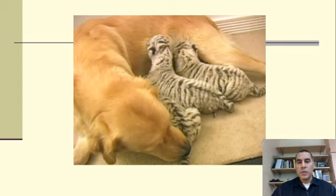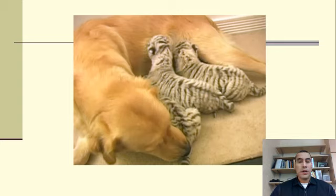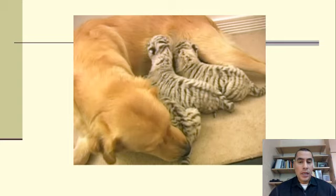I saw a video of a golden retriever that had taken in some baby tiger cubs abandoned by their mother and provided nourishment to them. A form of imprinting had occurred — these tiger cubs clung to the golden retriever, and interestingly the golden retriever basically treated them as her own. It'll be interesting to see how this relationship progresses when these baby tigers get old enough to eat the golden retriever.